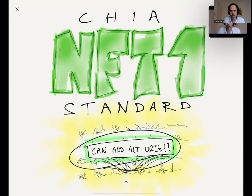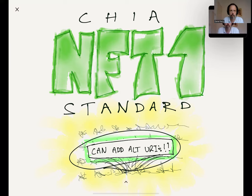Just to make sure everybody understands: there are actually three URIs in the NFT standard — one for your data (like your image), one for the metadata that describes your image, and one for the license. These are actually lists of URIs so you can add more links. However, in order for wallets to display the NFT properly, what you link to has to hash to a hash that's included inside the NFT. So if you modify the metadata later, the hash will change and the NFT won't display properly.